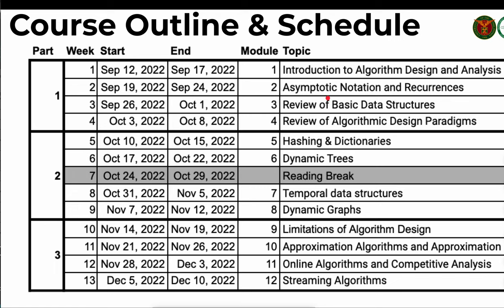Next, we cover asymptotic notation and recurrences. We'll discuss worst case analysis using big O notation and average case analysis. For problems with recursive definitions, we create corresponding recursive algorithms. However, computing the running time of recursive algorithms is difficult and not straightforward. We will discuss methods to get the computational running time of recursive algorithms. If you're familiar with the master theorem, some have developed closed forms to compute the running time of an algorithm. We will recall the master theorem in this part.